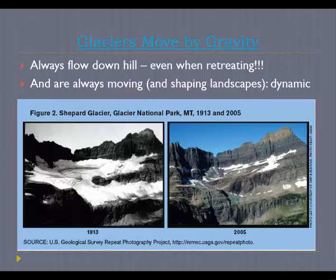Just like water, the frozen water in glaciers is always moving downhill under the force of gravity. Even as glaciers get smaller, the movement of the glacier and the individual water molecules within it continues in a downhill direction. It is this dynamic movement across the landscape over time that allows glaciers to be very effective geomorphic agents.